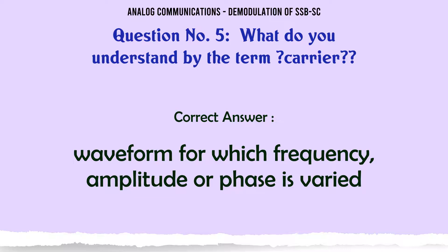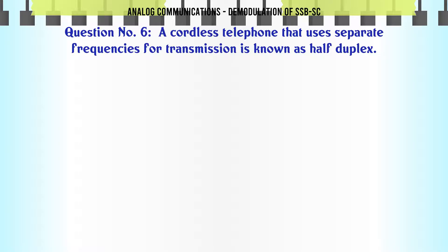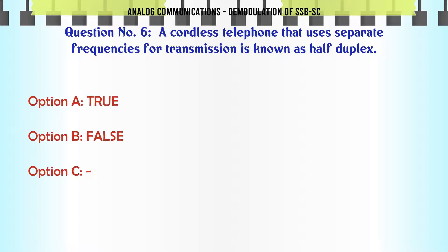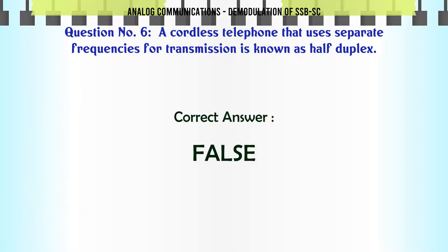A cordless telephone that uses separate frequencies for transmission is known as half duplex. True or False? The correct answer is False.